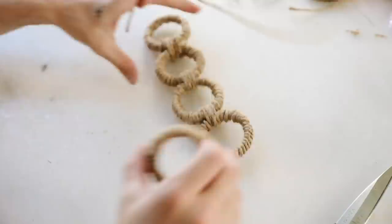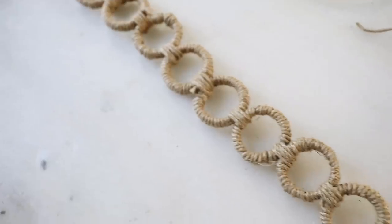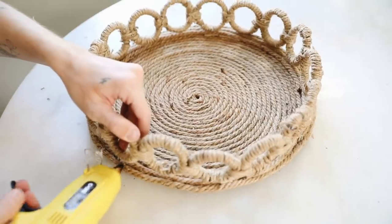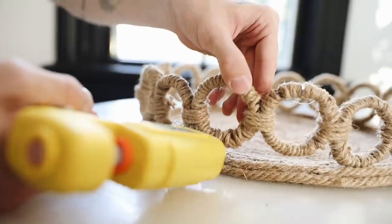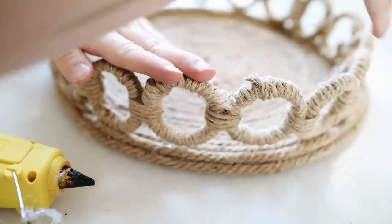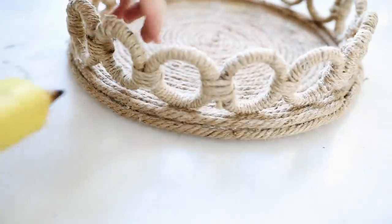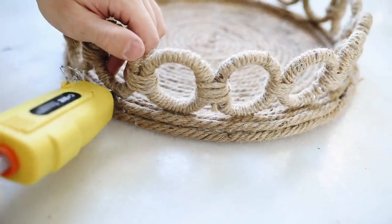We are essentially going to be creating a long chain of jute wrapped shower curtain rings which is going to make the rim of our tray. Once everything is fully connected, you can go ahead and glue it down to your base. I just added a generous amount of hot glue onto every single circle, pressed it down, waited for it to dry and that finished off your new jute wrapped tray.